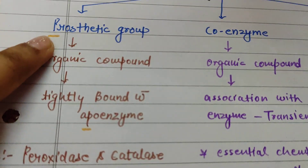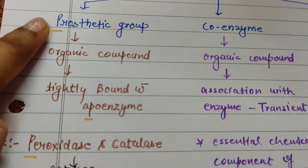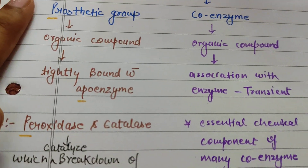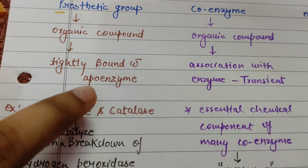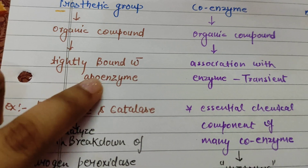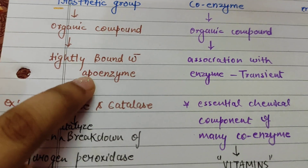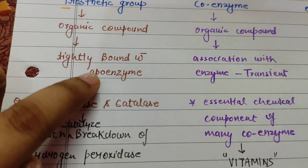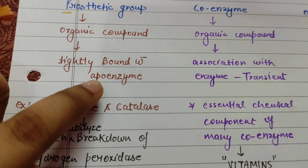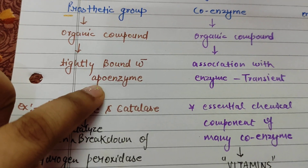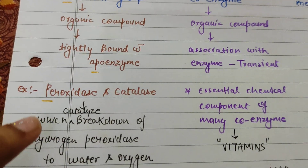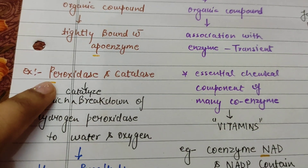To remember the example, note that P from Prosthetic group — Apoenzyme means the protein part of the enzyme — so remember that the Prosthetic group is linked to the protein part.